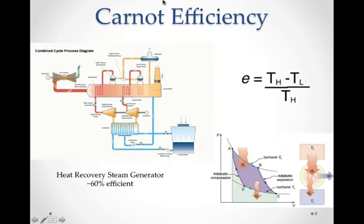So Carnot efficiency, even with the best heat engine possible, and our best systems possible now are called heat recovery steam generators for generating electricity, and they're a little bit more complex than our other system we looked at. But they get to efficiencies close to 60%, and so that's a lot better than 33%.